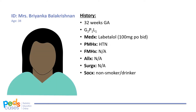Our second mother is Mrs. Brienneca Balakrishnan. Brienneca is 38 years old and is 28 weeks pregnant. She is expecting her second child, whom the ultrasound presumes to be female. Brienneca had her first child when she was 29, who was born prematurely at 32 weeks gestational age. Brienneca has a history of hypertension for which she is being treated with Labetalol. Brienneca does not smoke or drink and never has.